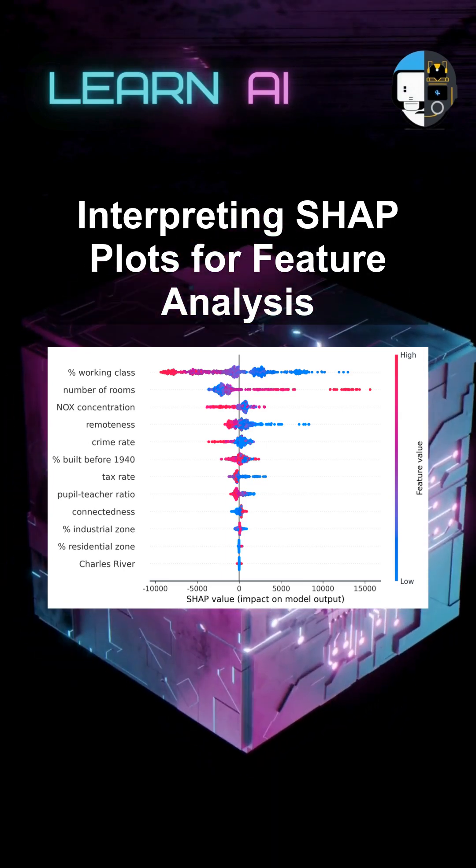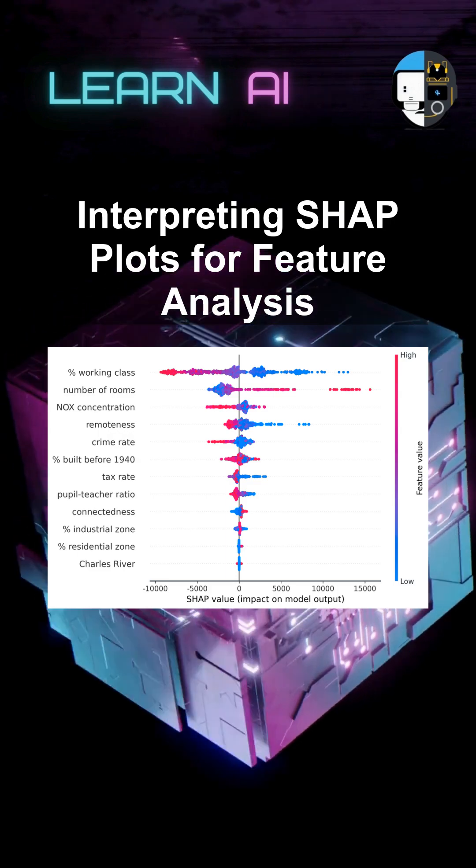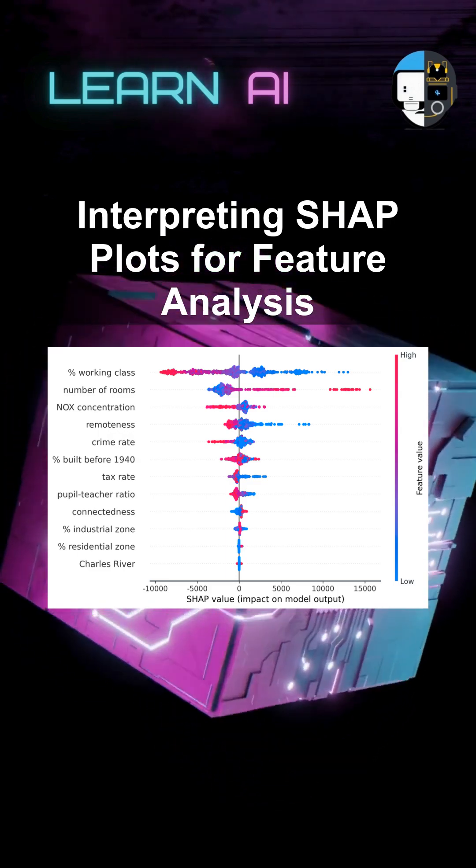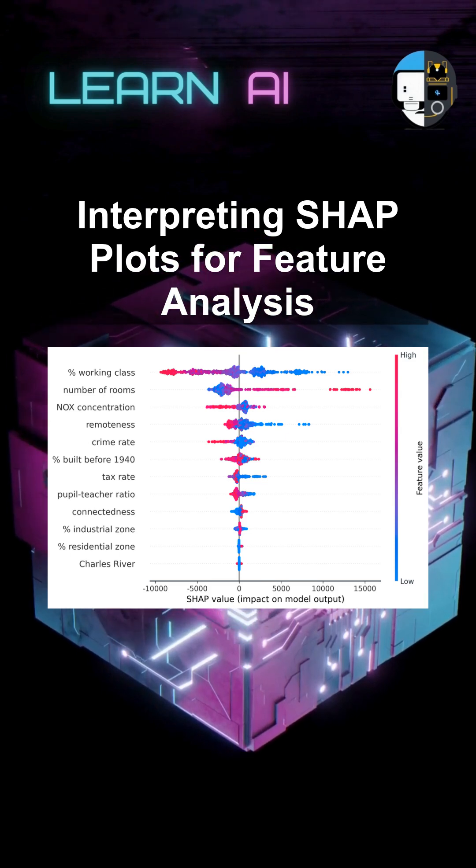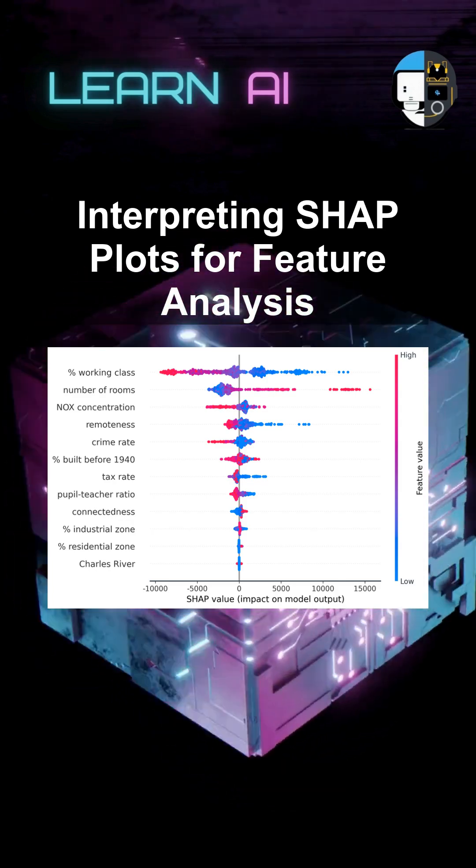Another valuable plot is the dependence plot, which shows the relationship between a feature and the model's output, accounting for interactions with other features. This plot is useful for identifying non-linear relationships and interactions between features.